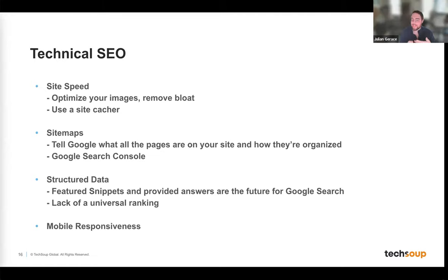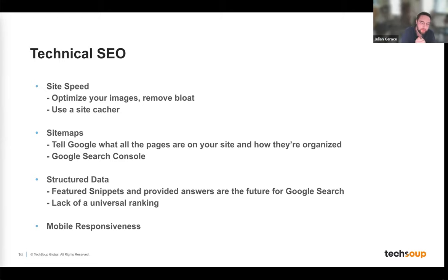Google's serving of snippets isolates information outside the context of the rest of your site, giving you less control over framing the discussion. The last technical item is mobile responsiveness — make sure your site works well on mobile. Google indexes the mobile version of your site first, so the speed and layout of the mobile version matters more than the desktop design. Most people doing Google searches are now on their phones, and this number continues to grow.